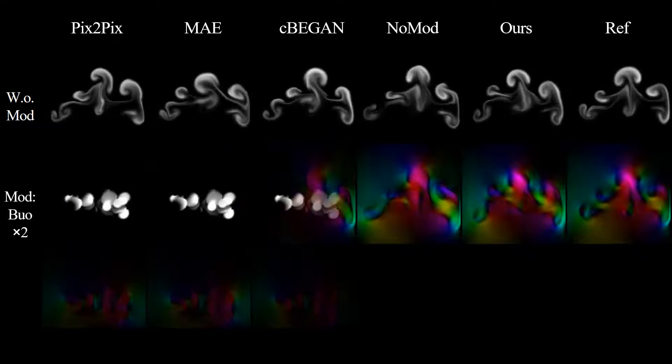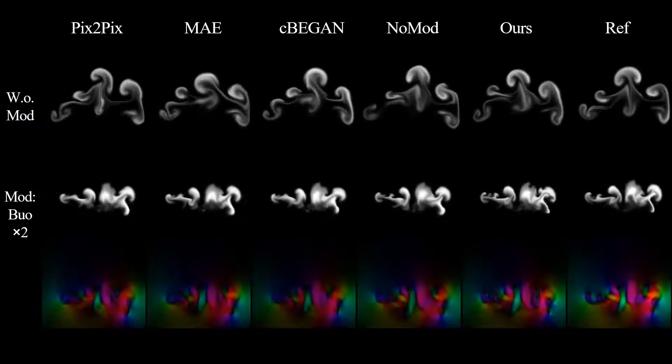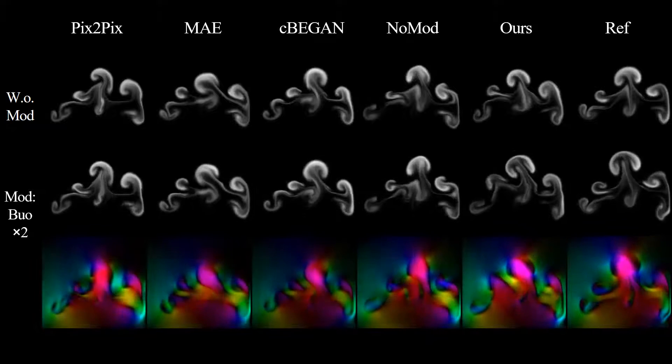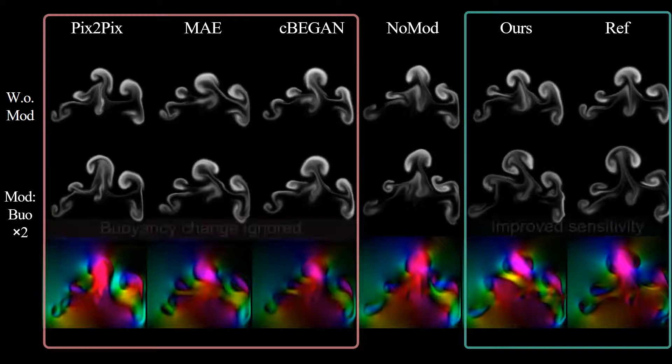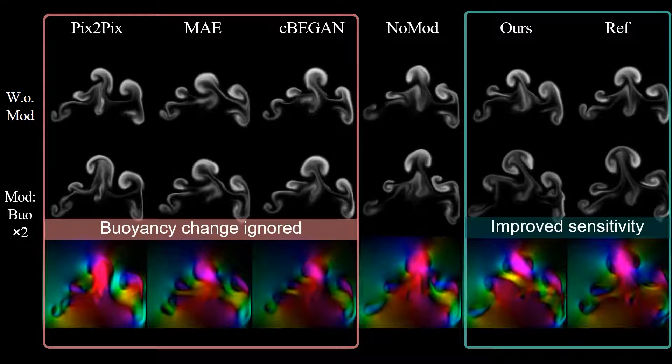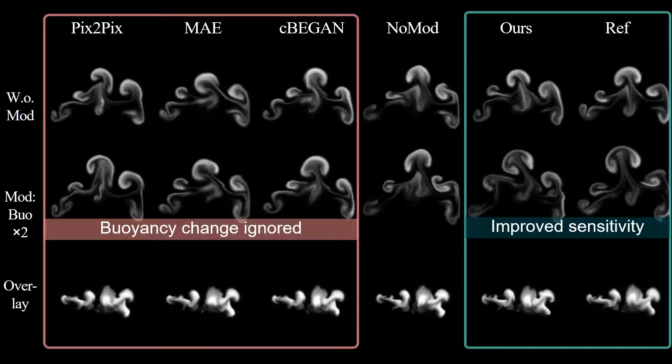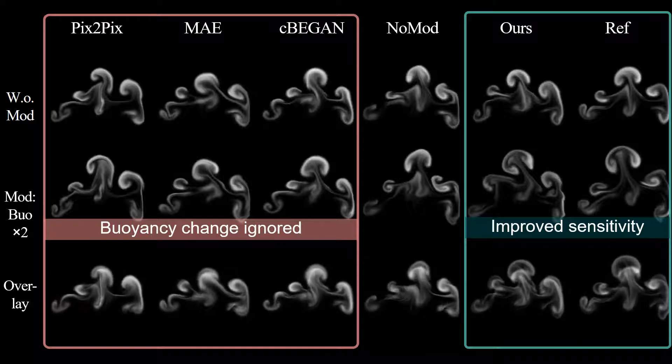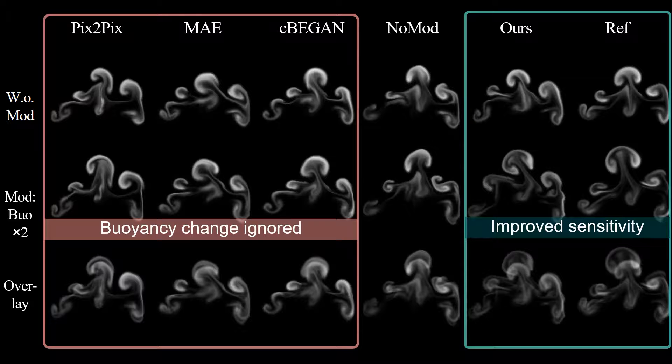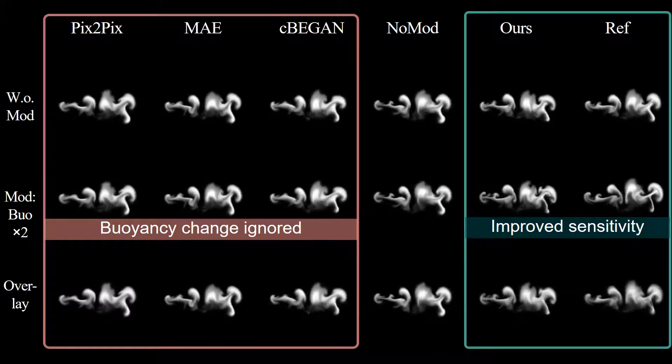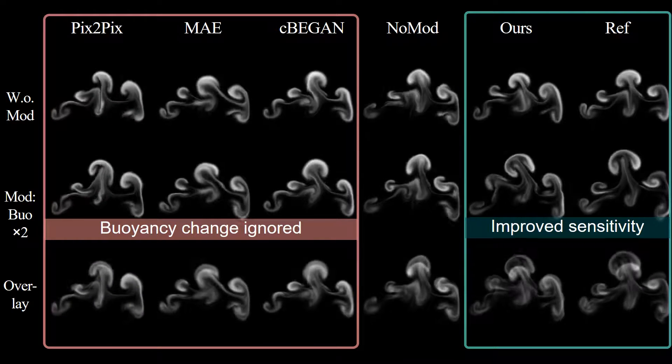After modification of enhanced buoyancy, models of pix2pix, MAE without adversarial learning, and conditional BEGAN ignore the buoyancy conditions. Our result achieves improved sensitivity. In fact, our method yields an improved learned representation of the large and complex space of fluid motion.